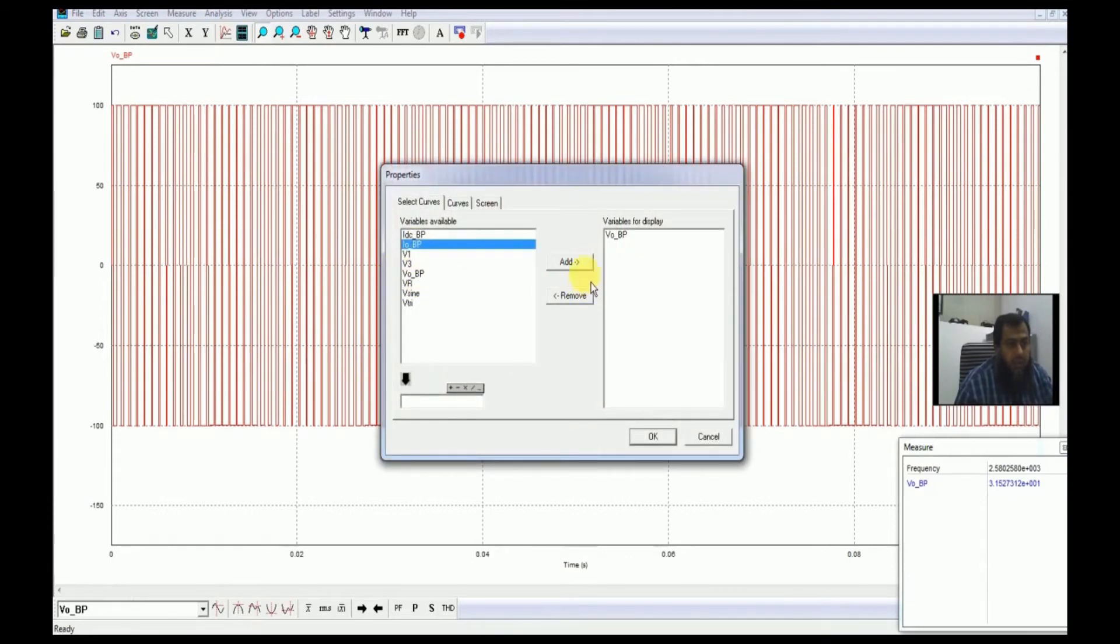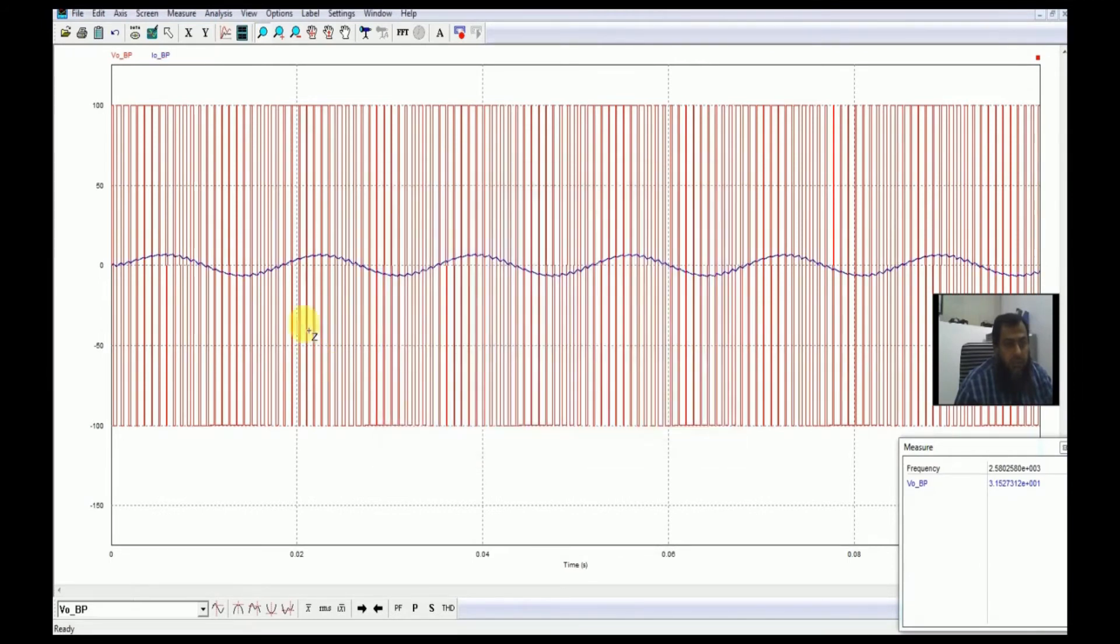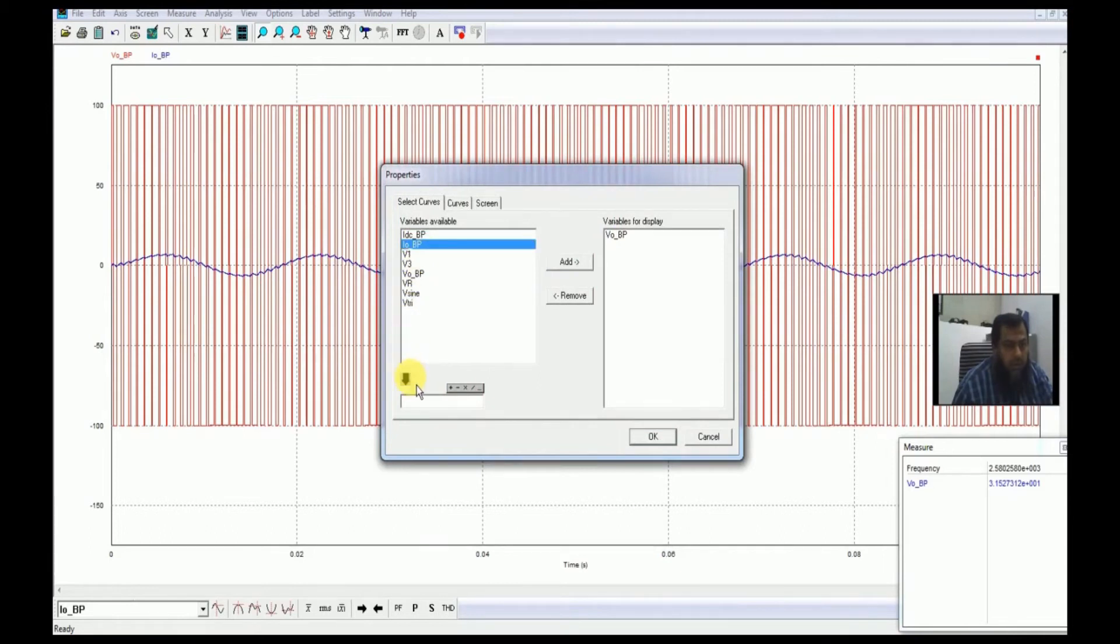Another thing important here is to see what is the type of the current which flows through this given circuit. You can see here that the current is sinusoidal. That is perhaps the reason we have used a sinusoidal waveform so that we get a current which is nearly sinusoidal.